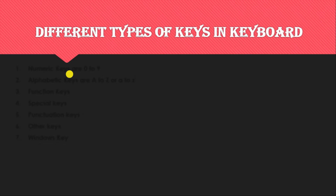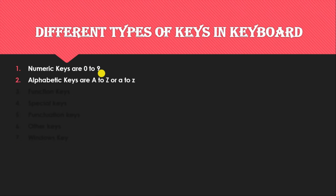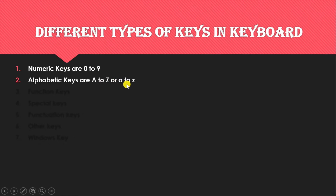We will learn about various kinds of keys in the keyboard. First one is numeric keys — numeric keys are 0 to 9, which you use while typing any number. Next are alphabets — A to Z. In the keyboard you will not see both uppercase and lowercase characters, because by using Caps Lock you can enter capital letters, and without Caps Lock you type small letters.